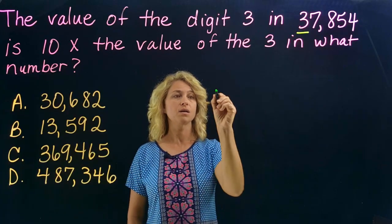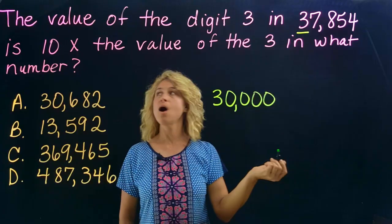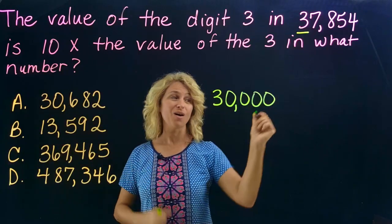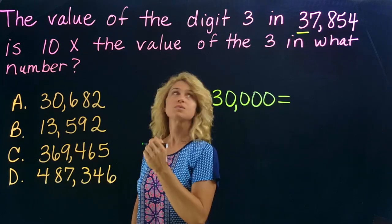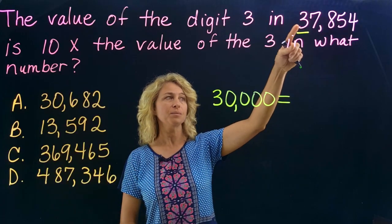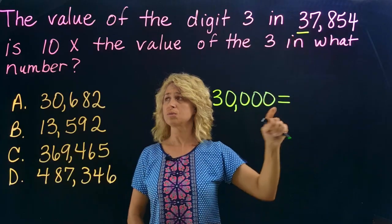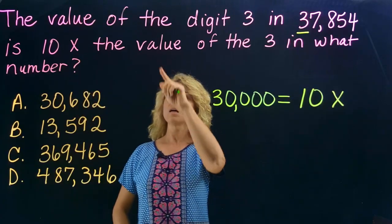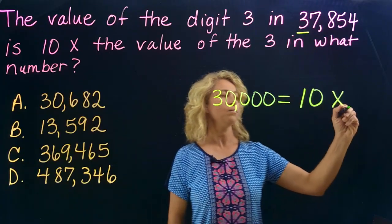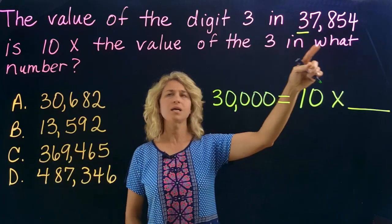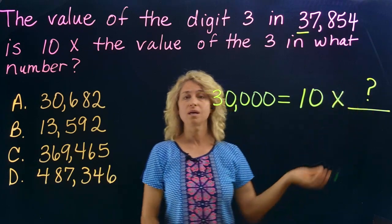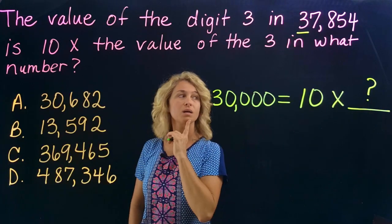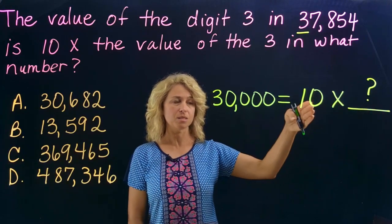Ones, tens, hundreds, thousands, ten thousands — the value is thirty thousand. The word 'is' is another symbol that means equals in math. So far our equation is: thirty thousand equals ten times the value of the three in what number. Ten times what equals thirty thousand? Can you think about what we would multiply times ten to get thirty thousand?